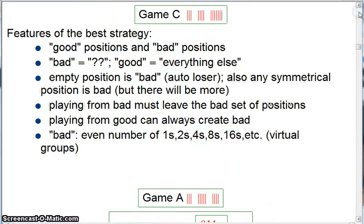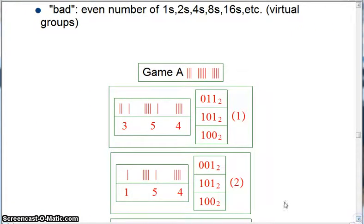So let's see. Let's go back up to the principles before I show you another game. The empty position is bad. Absolutely. The empty position definitely has an even number of ones, twos, fours, eights, sixteens. If you write everything in binary and it's all zeros, you're gonna have zero, and that's an even number of all kinds of groups. Playing from a bad position must leave the bad set of positions. So let's see. If you start out, like player two, right near the start of game A. If you start out in this position, one, five, four, why did player two have to move in such a way? Why couldn't they have left player one a bad position and then had the advantage?